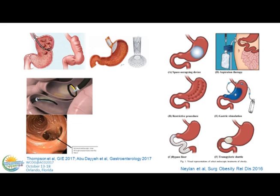The procedures I'm going to talk about — there's a multiplicity of modalities, and I'll focus on the ones where we have a lot of data and those that are available in the United States. That includes aspiration therapy, the intragastric balloon, restrictive procedures with sleeve gastroplasty, and the duodenal jejunal bypass liner. I'm not going to talk about the POSE or full-sense procedures, or very novel approaches like using magnets to create a fistula between the proximal and distal small bowel, as we don't have enough data yet.